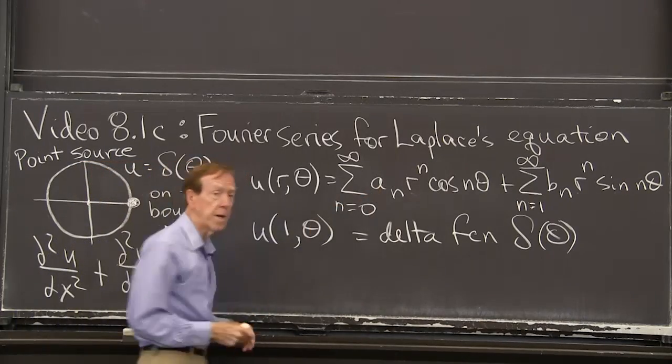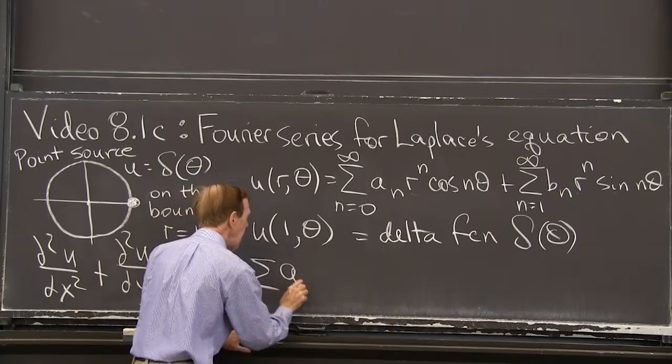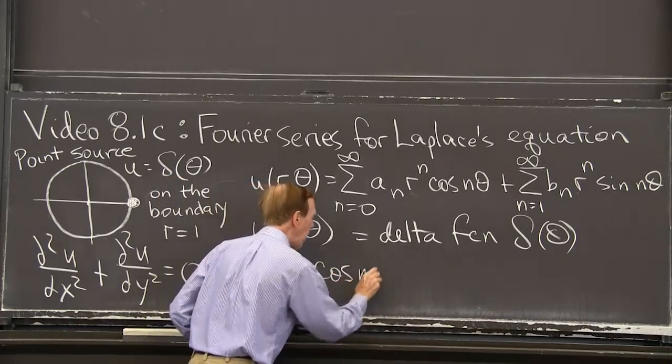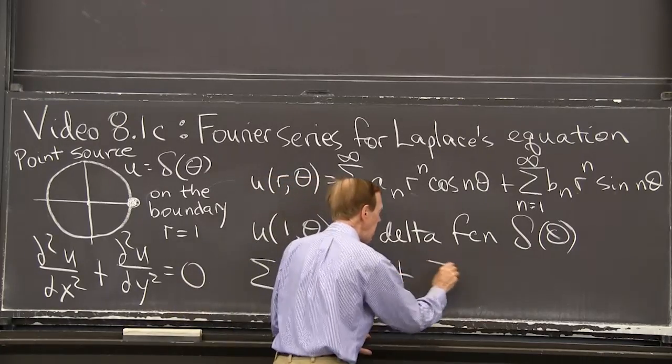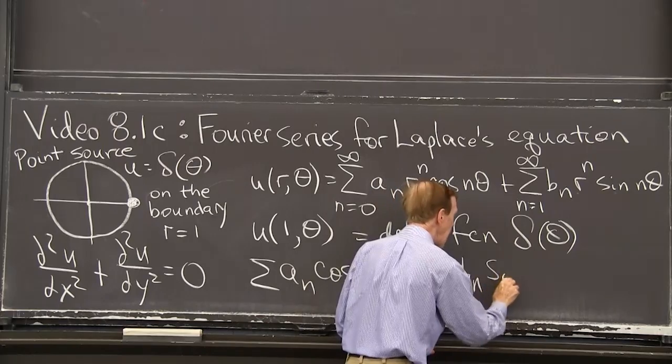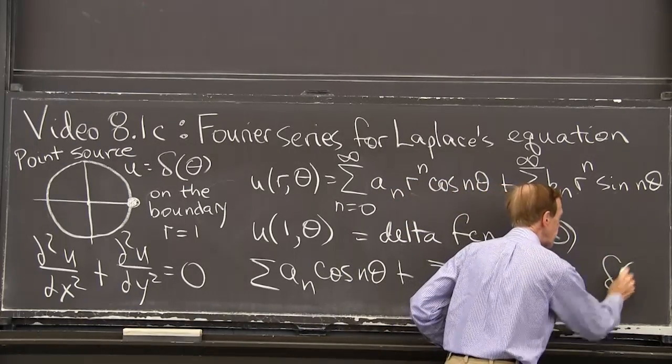So by putting r equal to 1 in this formula, we're supposed to get the delta function. So let me put r equal 1. Easy to do. It's the sum of a_n times 1 to the nth cos n theta plus the sum of b_n times 1 to the nth sine n theta is supposed to match the delta function.